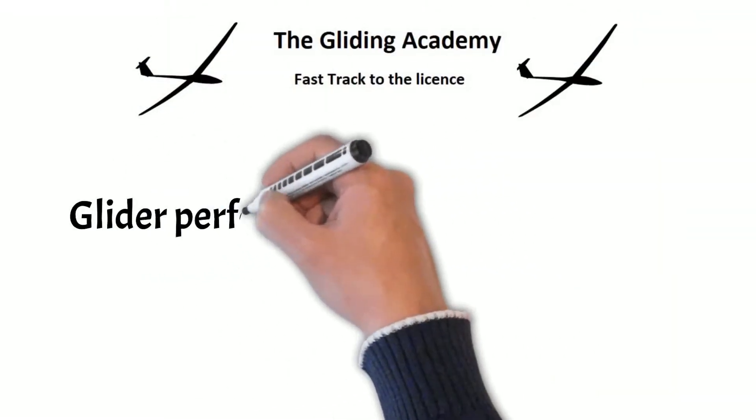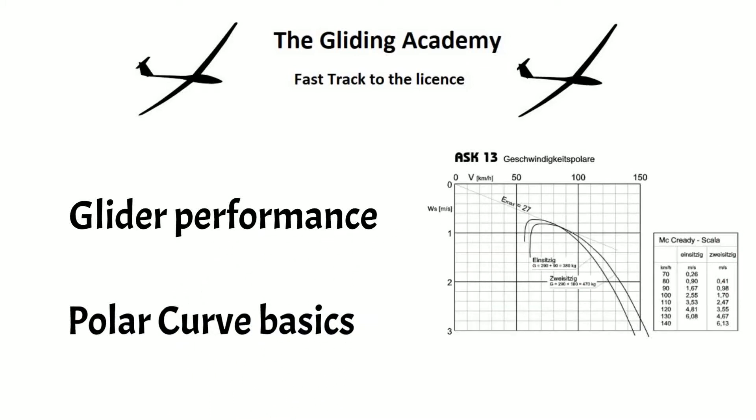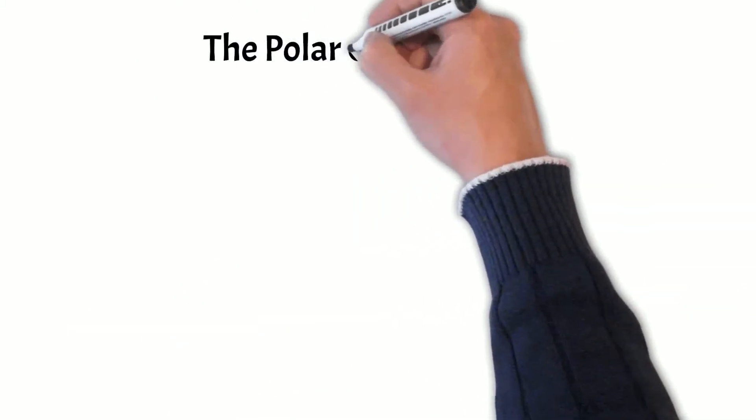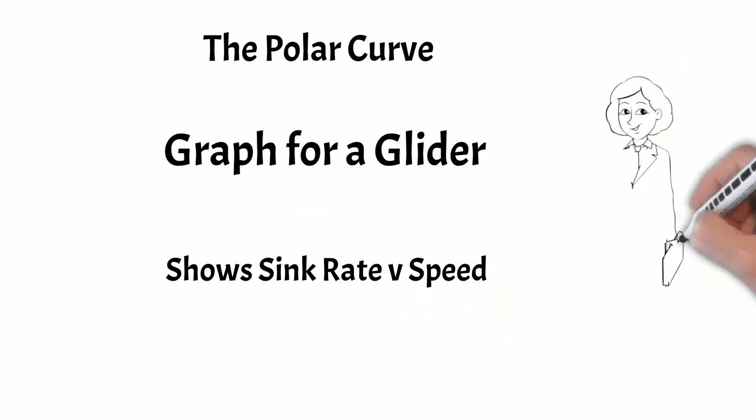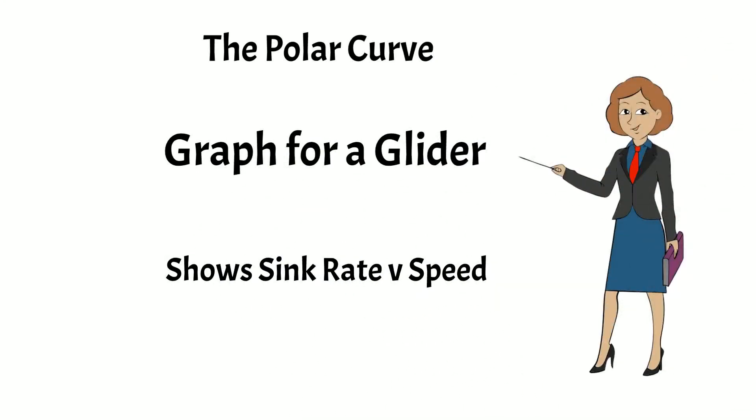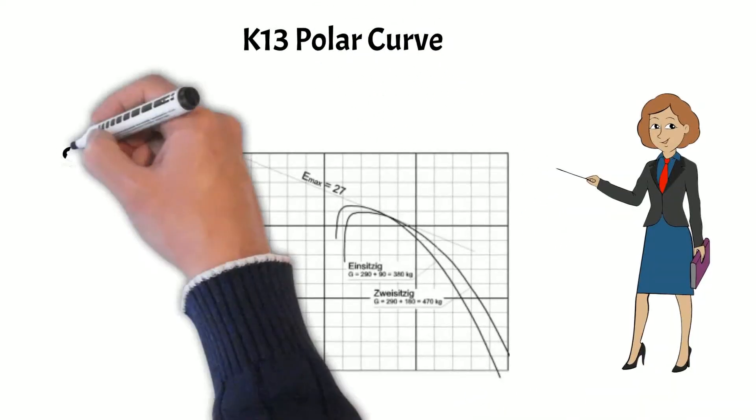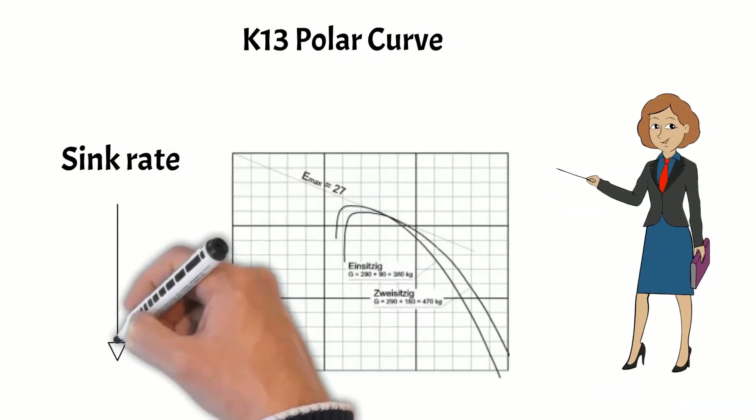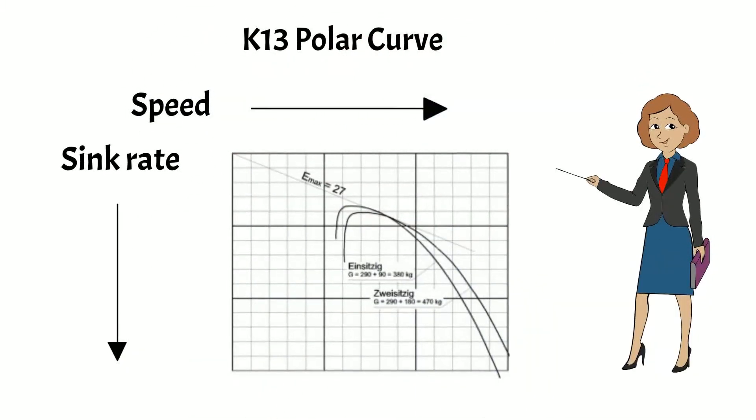A polar curve shows how the sink rate changes with airspeed. For this demonstration we will use the polar curve for a K-13. Sink rate is on the vertical axis. Airspeed is on the horizontal axis.